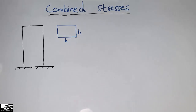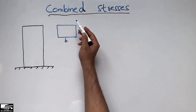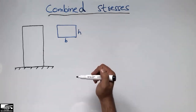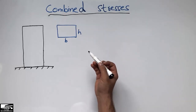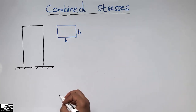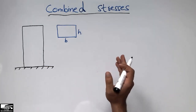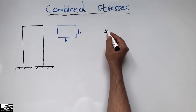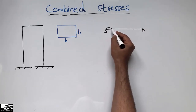Hello guys, welcome back to the Civil Engineering YouTube channel. Please subscribe for daily civil engineering videos. Today our lecture is about combined stresses. Combined stress means that we have two different types of stresses produced in any structural member — it may be a beam, column, slab, or footing. Most of the time we deal with single stresses.